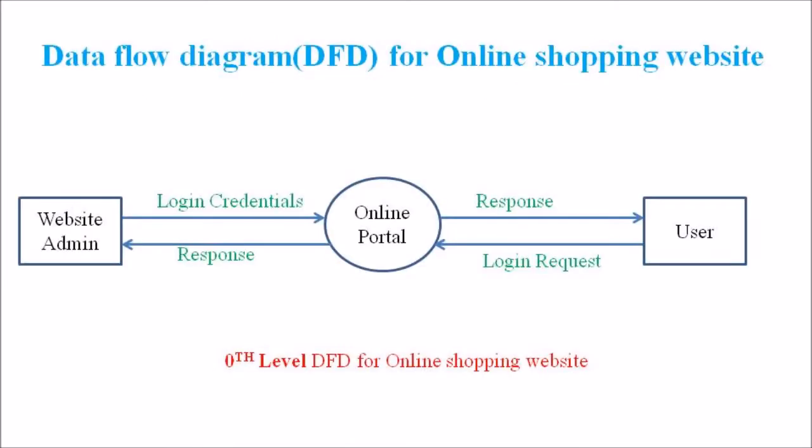As mentioned in the last lecture, we had discussed the data flow diagram for an online shopping system. The zeroth level DFD contains two entities — website admin and user — and a process known as online portal. There are data flows between these entities towards the process, as well as data flows from the process back to the end-user entities.